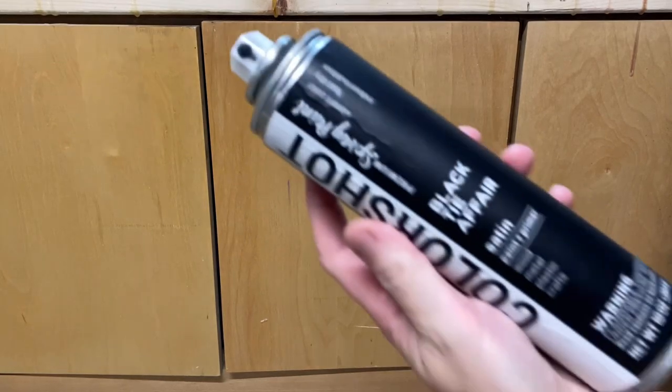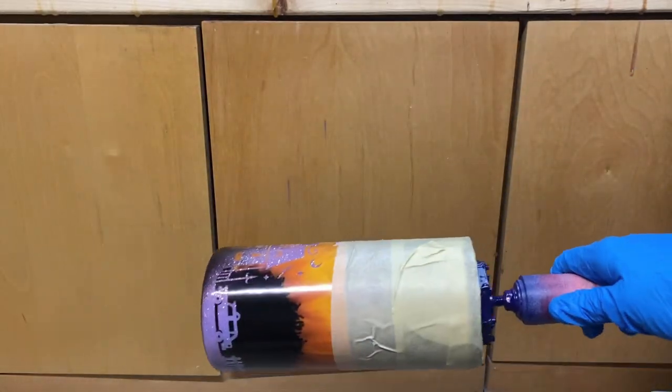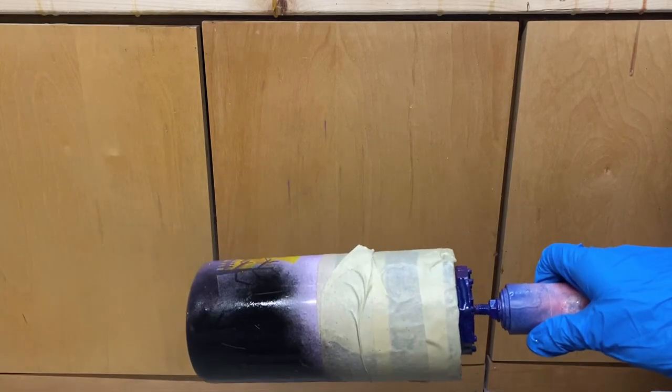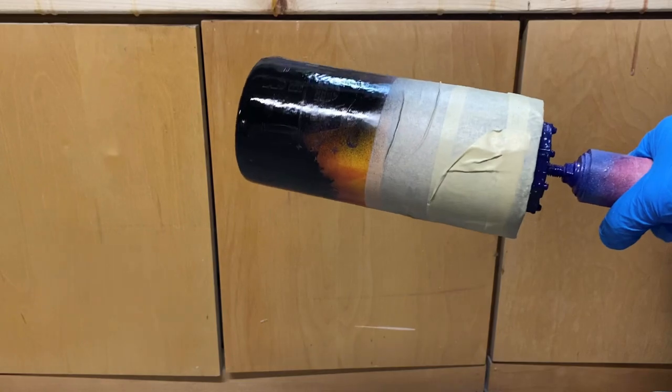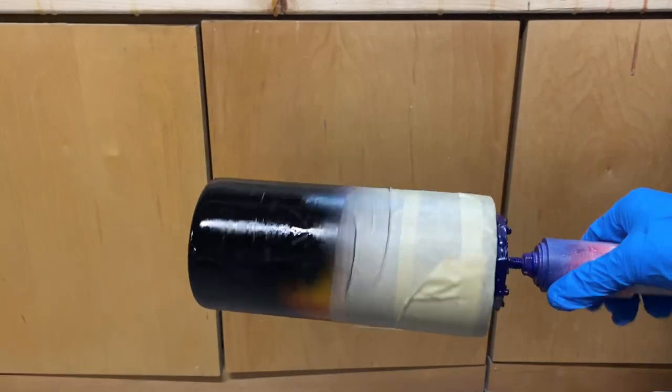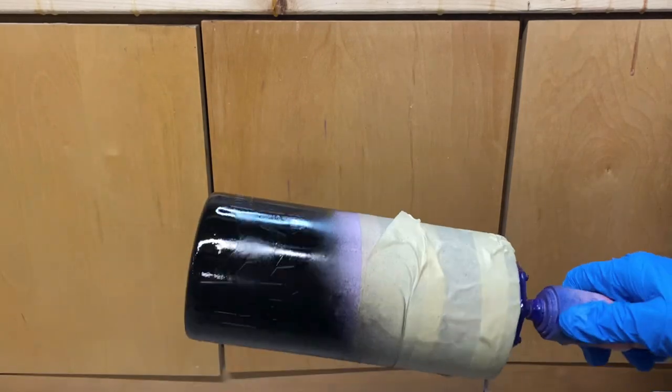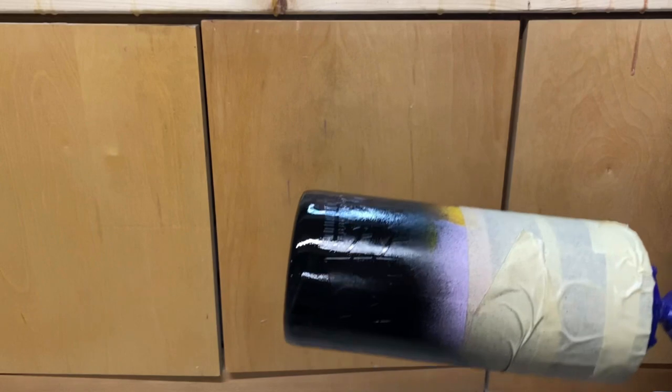Now we're going to go ahead and paint. So I'm going to use black tie affair from color shot. I've shaken this really well so I can get good one coat coverage. If your spray paint doesn't cover this well and you're going to need two coats, just do two thin coats. Don't try to go in heavy because you'll get runs and that's no good. Make sure that you also get the bottom of your tumbler as well. Just double check that you're getting all those little tiny stars and bats and all the small details.